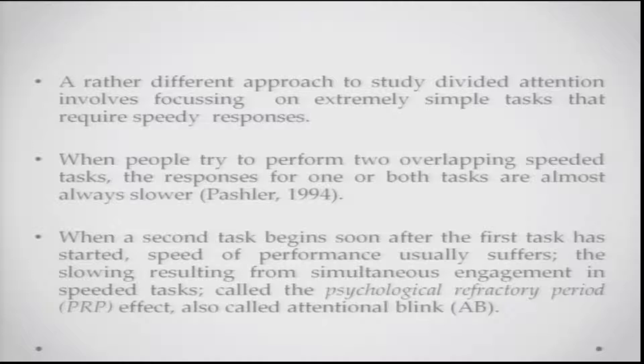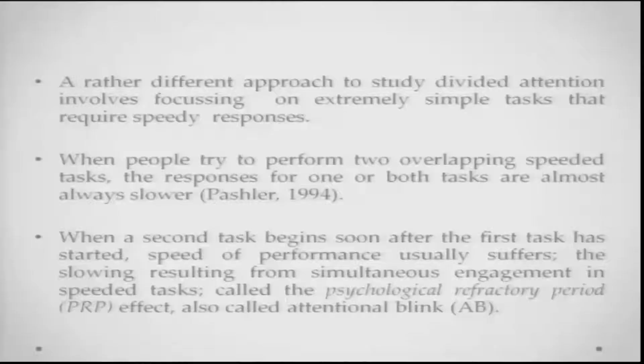A slightly different approach to studying divided attention involves focusing on very simple tasks that require speedy responses. For example, if people try to perform overlapping speeded recognition tasks like those done in labs, the response for one or both tasks is always slower. If the second task begins soon after the first task started, the speed of performance usually suffers. The slowing results from simultaneous engagement in two speeded tasks. This slowing is called the psychological refractory period, also referred to as the attentional blink phenomenon in attention research.